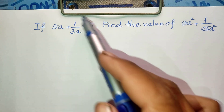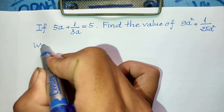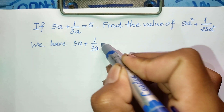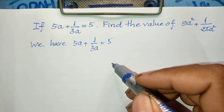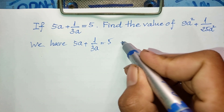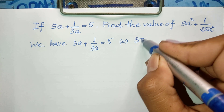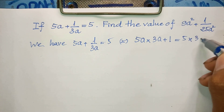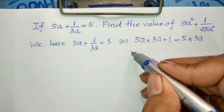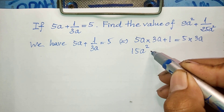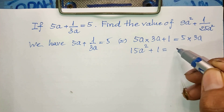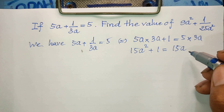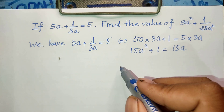We have the equation (5a + 1) divided by 3a equals 5. I multiply both sides of this equation by 3a. So we get 5a multiplied by 3a plus 1 equals 5 multiplied by 3a, which gives us 15a² plus 1 equals 15a. Now I divide both sides of this equation by 5a.